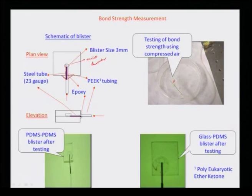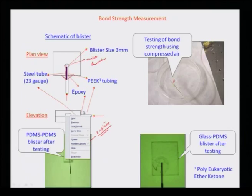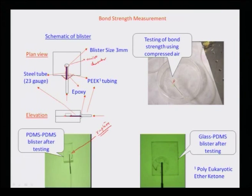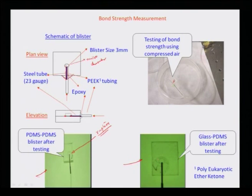The bond strength was measured by using lithography to develop a microchamber filled with air through a steel tubing and PEEK tubing secured with epoxy. Controlling the air at a certain pressure causes expansion of the chamber until rupture develops. Even before rupture, under a microscope you can see the two layers separating along the edges. The critical pressure at which the layers separate gives the basis for formulating bond strength of PDMS-to-PDMS.